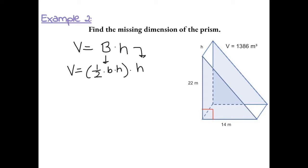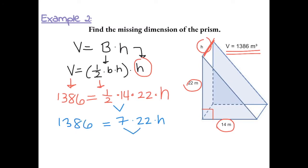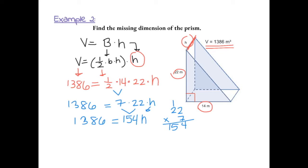Now let's fill in any given information. We have the volume, so we replace V with 1386, equal to one-half times the base of the triangle, which is 14, times the height of the triangle, which is 22, times H — the missing height of the prism. Now we simplify: one-half times 14 gives us 7. Then 7 times 22 gives us 154.